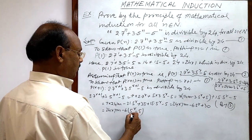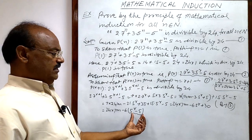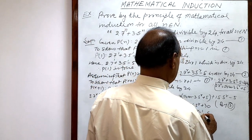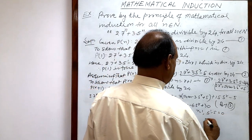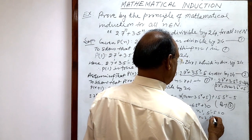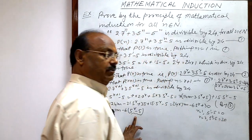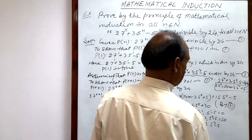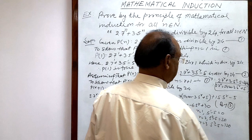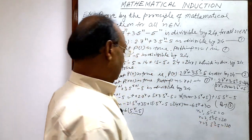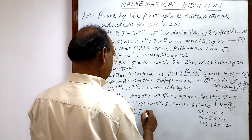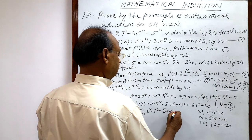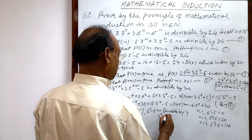We need to show that 5ʳ - 5 is divisible by 4. You can check: putting r = 1 gives 5¹ - 5 = 0, and putting r = 2 gives 5² - 5 = 20, which is divisible by 4. So 5ʳ - 5 is divisible by 4. Therefore we can write 5ʳ - 5 = 4p for some natural number p.